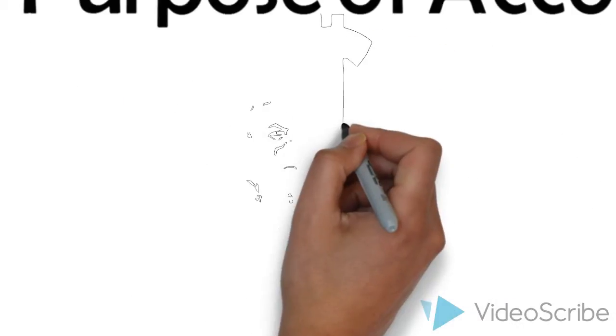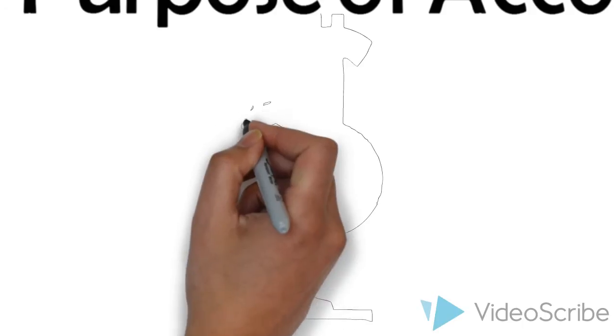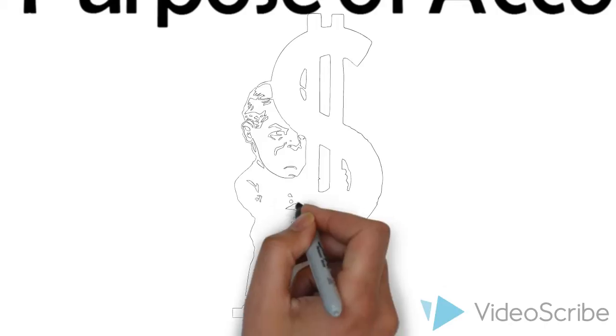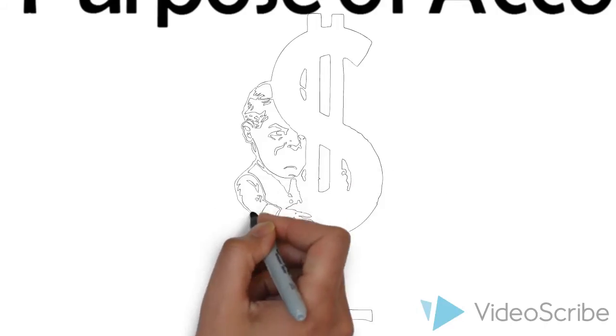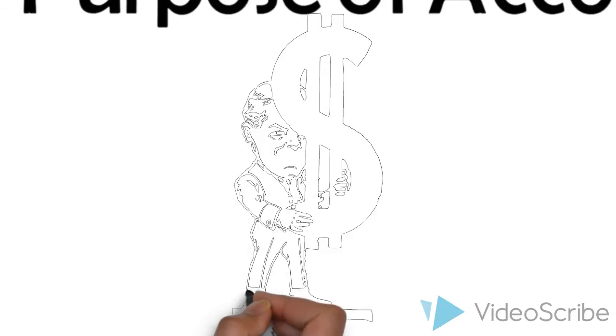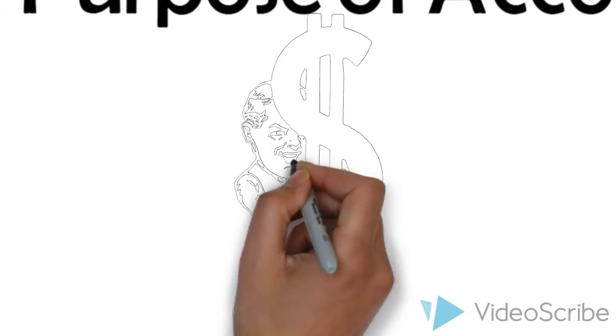So we should apply logic to determine which method best achieves our objective. So the first question is: what is the purpose of accounting? The answer: to provide information that allows external stakeholders to make decisions about which organization should receive their scarce resources.